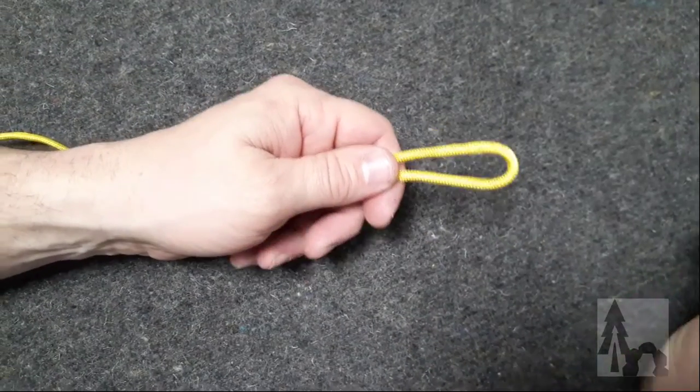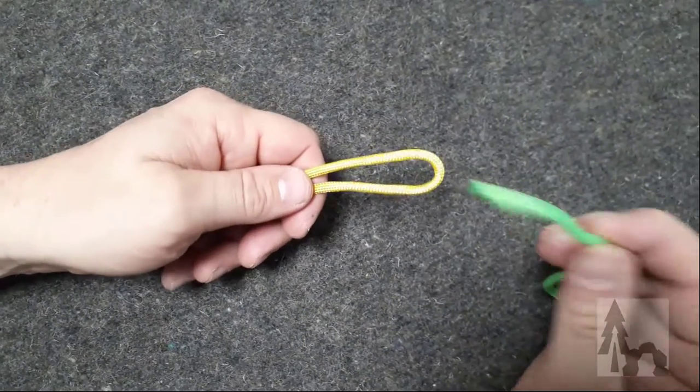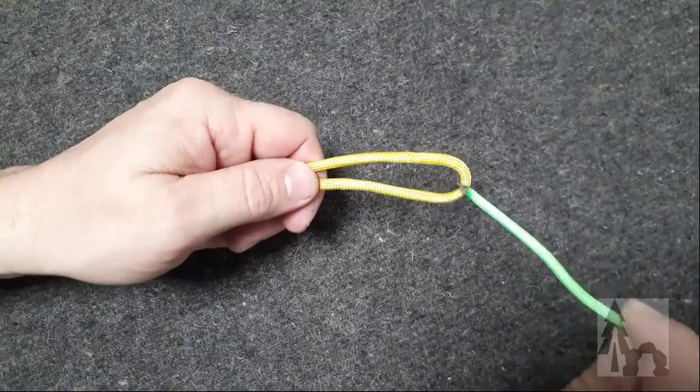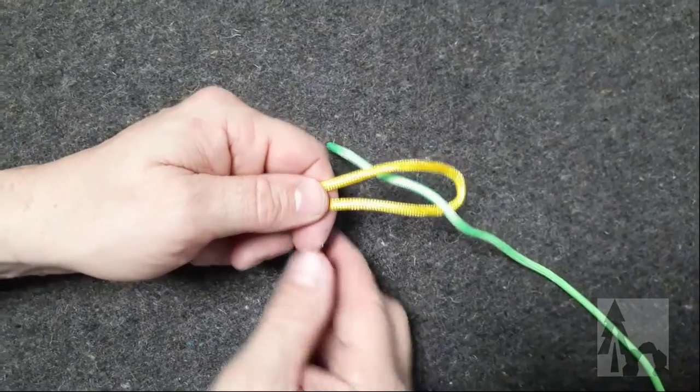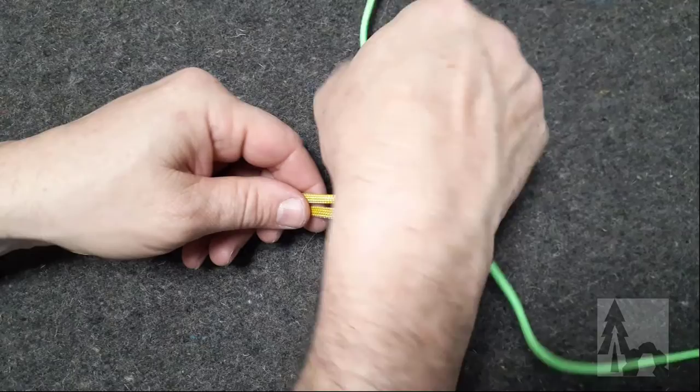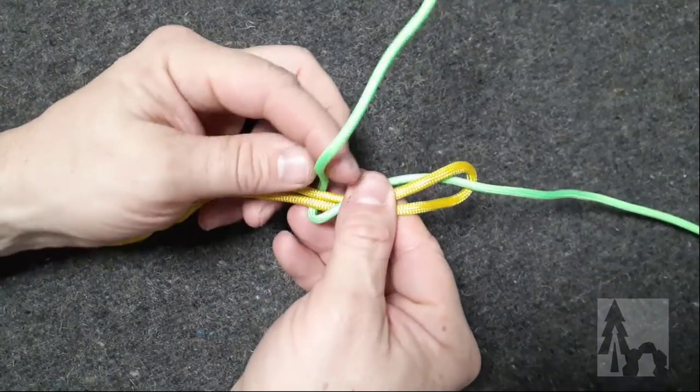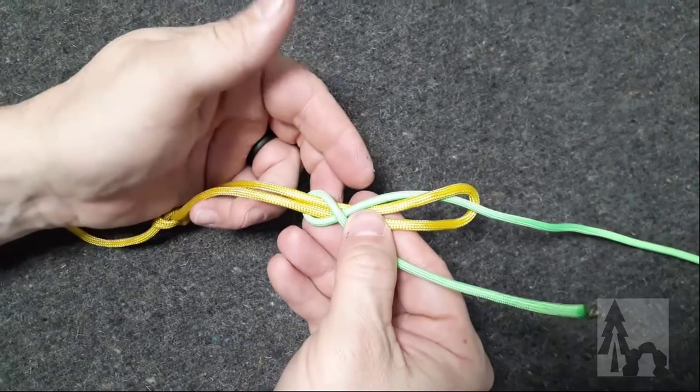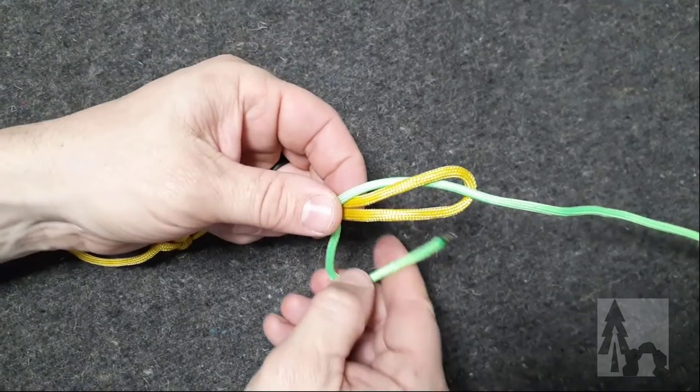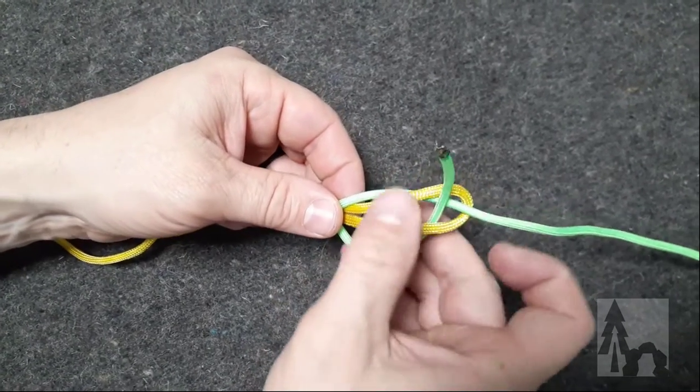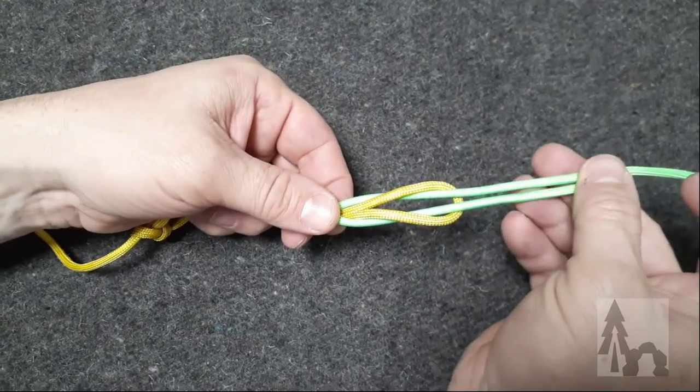So I get the bite, I'm going to take my working end of the tying on line, I'm going to dive down through the loop. Then I'm going to come out across the loop, all the way around the loop.